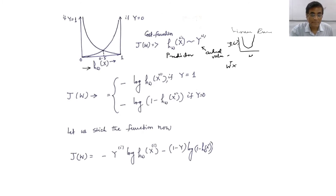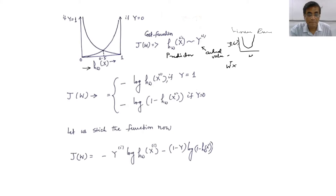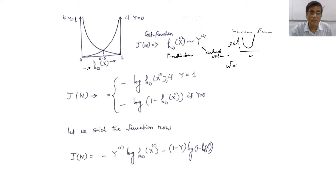The philosophy is: if the predictor and the actual value are the same, there is no penalty — no cost involved. But if the predictor is telling something different from the actual value, we penalize it, which is manifested as an increasing cost in the cost function. When the ground truth is y equals 1 and the predictor also says 1, the cost is 0 — no penalty at all.